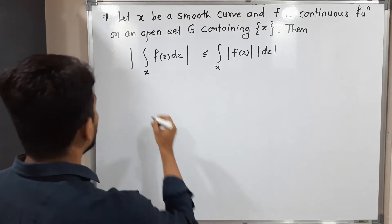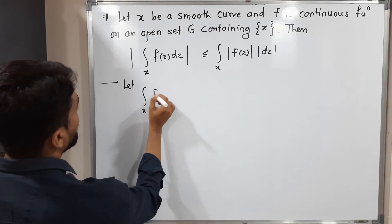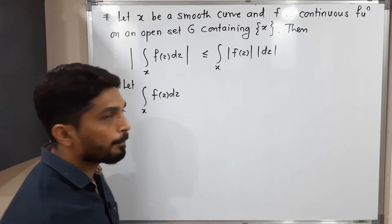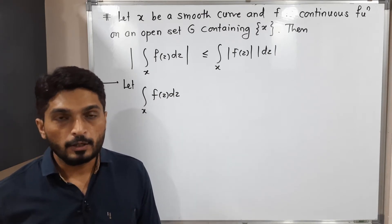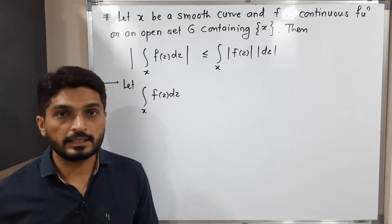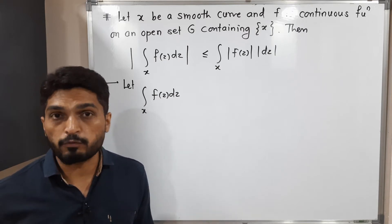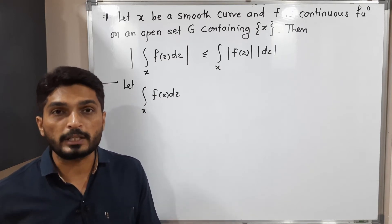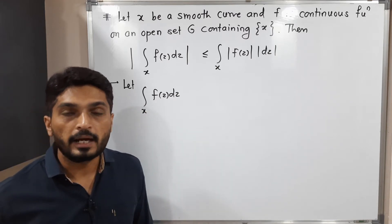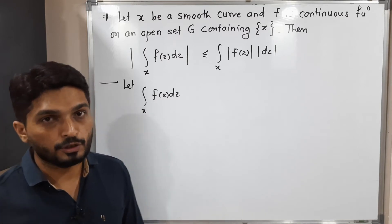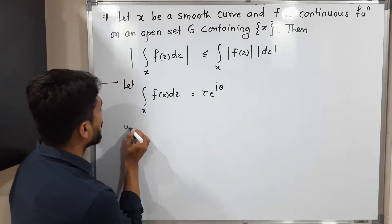Let us start the proof. First of all, we will consider the integration over x of f(z) dz. This is complex integration, so the result will be a complex number. Any complex number can be expressed in three different ways: in Cartesian form, polar form, or exponential form. I am going to express this integral in exponential form.